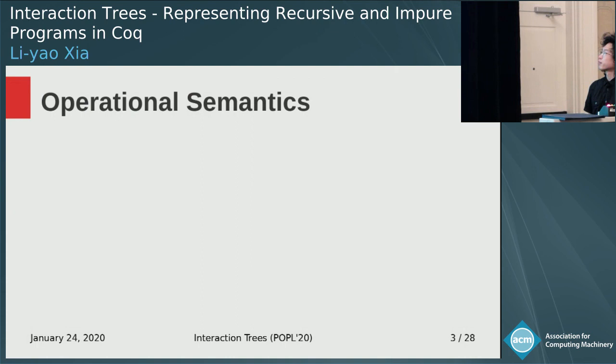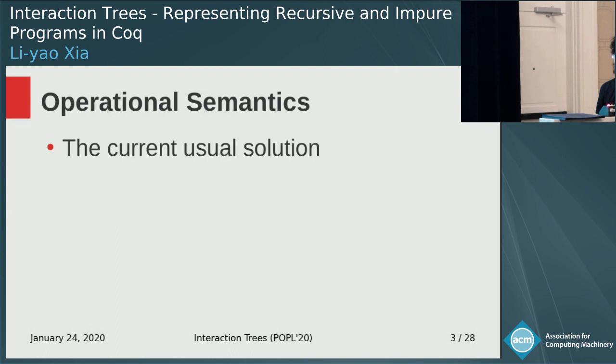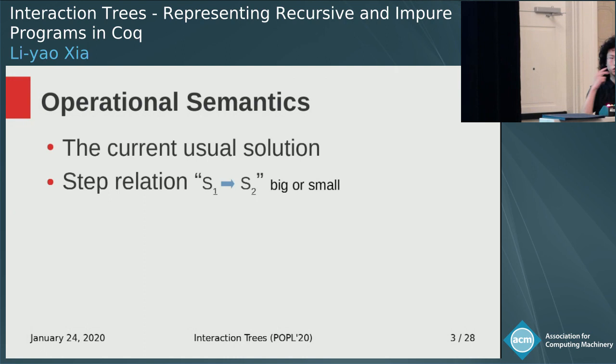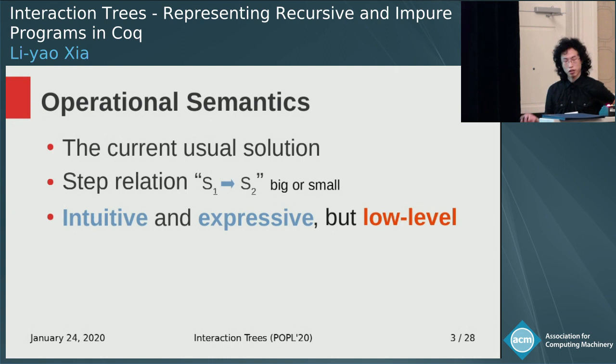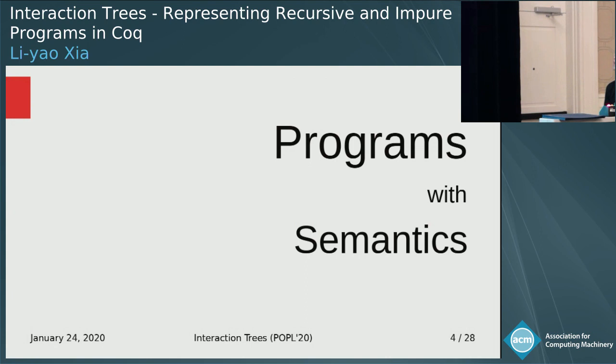So how is it usually done? You do some kind of operational semantics. The usual way is to give a transition relation between states of the program. It's a very simple idea, and you can extend it to model all kinds of effects. But because it is low-level, I'm going to explain why this has its drawbacks.